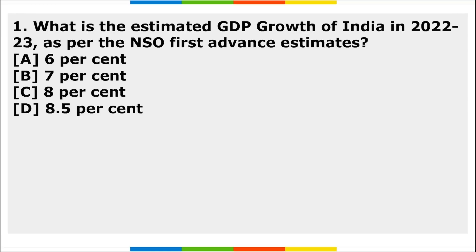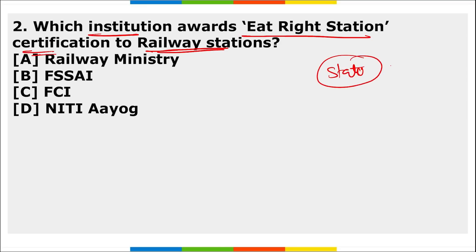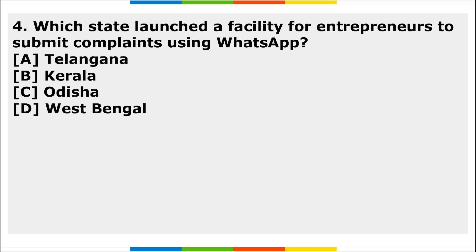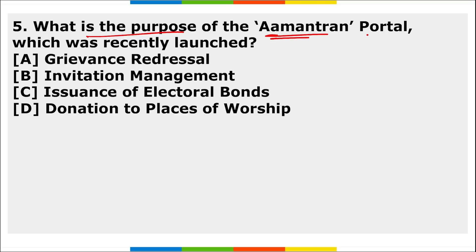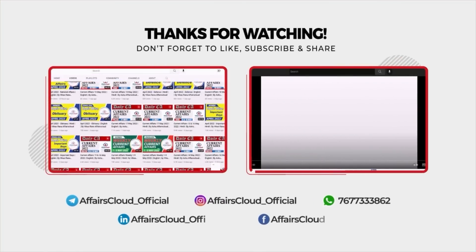Homework questions: First, what is the estimated GDP growth rate of India in fiscal year 2022-23 as per the NSO First Advance Estimate? Second, which institution awards the Eat Right Station certification to railway stations, and which station was recently awarded? Third, which country is the Kīlauea volcano — which was recently in the news — located in? Fourth, which state launched a facility for entrepreneurs to submit complaints using WhatsApp? Fifth, what is the purpose of the Amantran Portal which was recently launched? Do like the video and share your views in the comments.